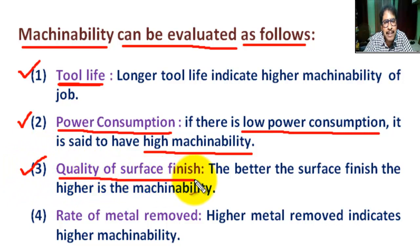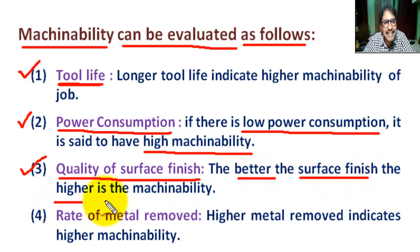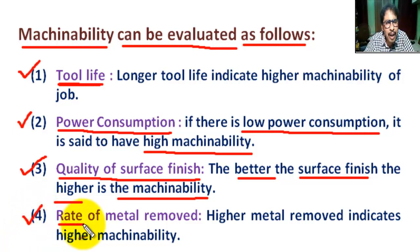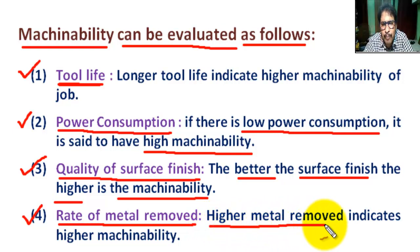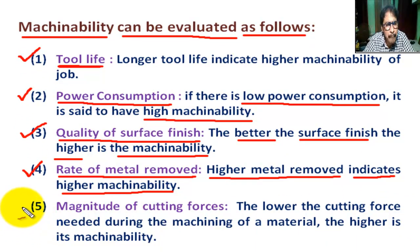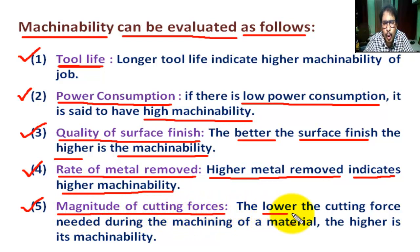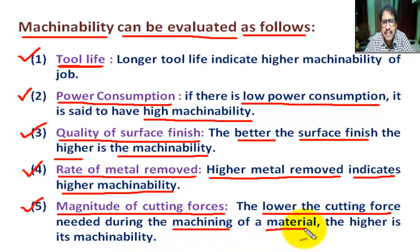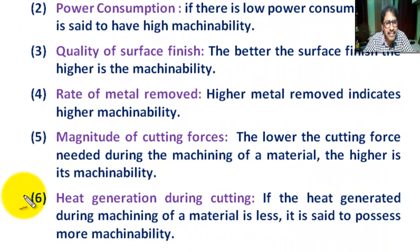Number three: quality of surface finish — the better the surface finish, the higher the machinability. Number four: rate of material removal — higher metal removal rate indicates higher machinability. Number five: magnitude of cutting force — the lower the cutting force needed during the machining of a material, the higher its machinability.